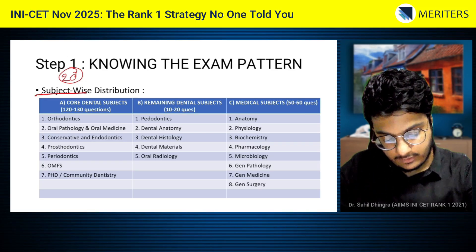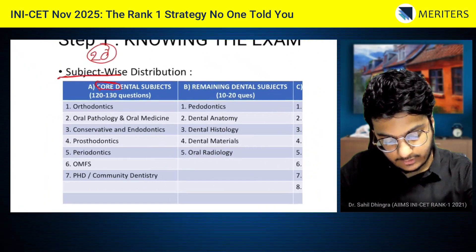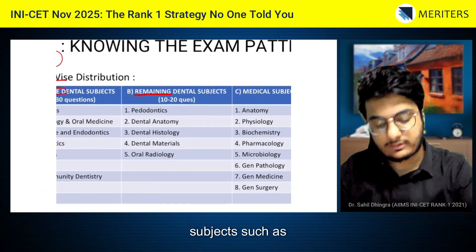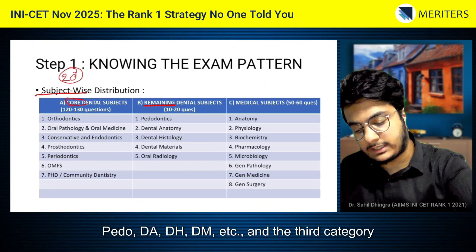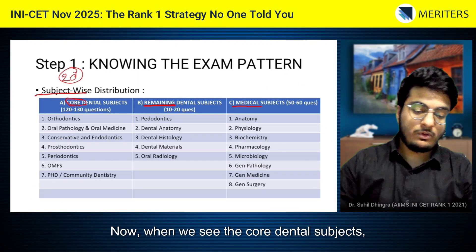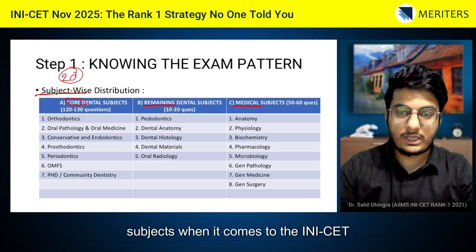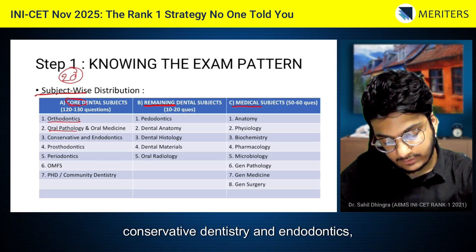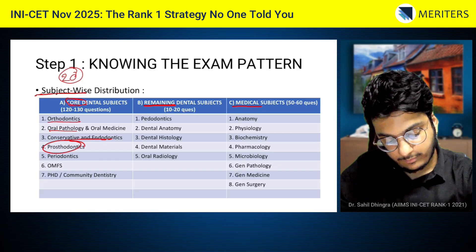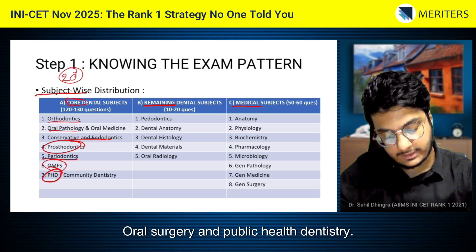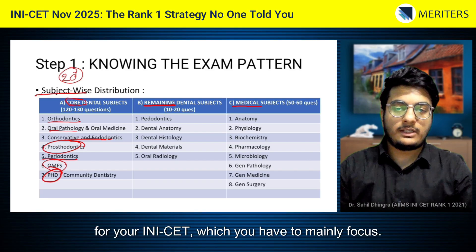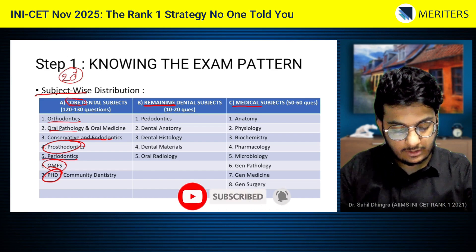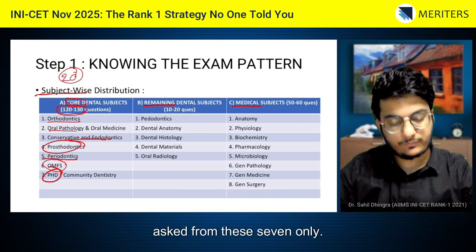Suppose we divide the subjects into three parts. The first subcategory is the core dental subjects, mostly the ones you study in your final year of BDS. The second are the remaining dental subjects such as PEDO, DADH, DM, etc. The third category is the medical subjects. The core dental subjects for INICET are: orthodontics, oral pathology and oral medicine, conservative dentistry and endodontics, prosthodontics, periodontics, oral surgery, and public health dentistry. These seven core subjects are the main focus, as almost 120 to 130 questions would be asked from these seven alone.